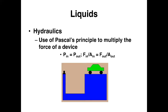So if you apply force over a small area on the left, that force is multiplied by the increase in area on the right. You can use a small force to lift a large object, and this is how hydraulic lifts, presses, jacks, and various other machines like that work.